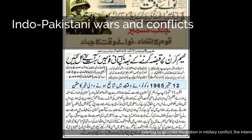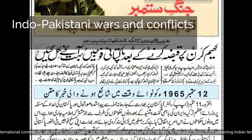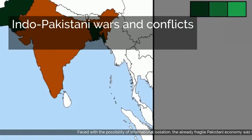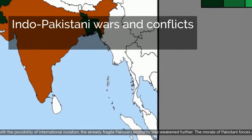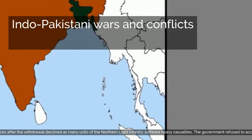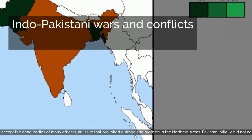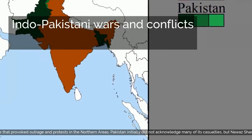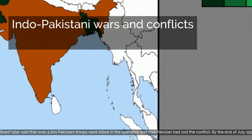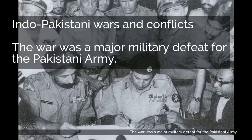Fearing large-scale escalation in military conflict, the international community, led by the United States, increased diplomatic pressure on Pakistan to withdraw forces from remaining Indian territory. Faced with the possibility of international isolation, the already fragile Pakistani economy was weakened further. The morale of Pakistani forces after the withdrawal declined as many units of the Northern Light Infantry suffered heavy casualties. The government refused to accept the dead bodies of many officers, an issue that provoked outrage and protests in the northern areas. Pakistan initially did not acknowledge many of its casualties, but Nawaz Sharif later said that over 4,000 Pakistani troops were killed in the operation and that Pakistan had lost the conflict. By the end of July 1999, organized hostilities in the Kargil district had ceased. The war was a major military defeat for the Pakistani army.